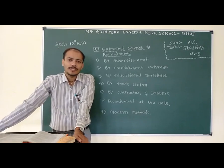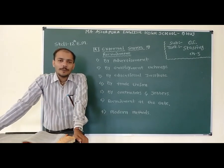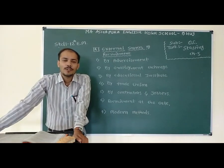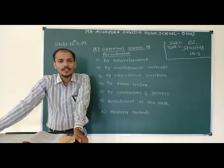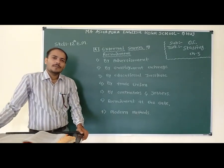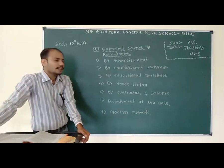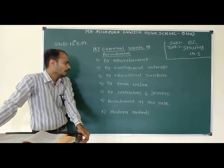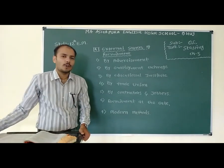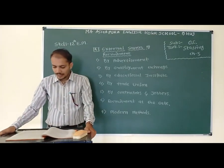What are the external sources of recruitment? Company ke andar staff ki requirement hai, toh company internal sources ya external sources, dono hi sources use kar sakte. External sources se bhi staff ki vacancy jo hai wo fulfill ki ja sakti hai. Total seven methods hain: by advertisement, by employment exchange, by educational institute, by trade union, by contractor and jobbers, recruitment at the gate, and last one is a modern method.